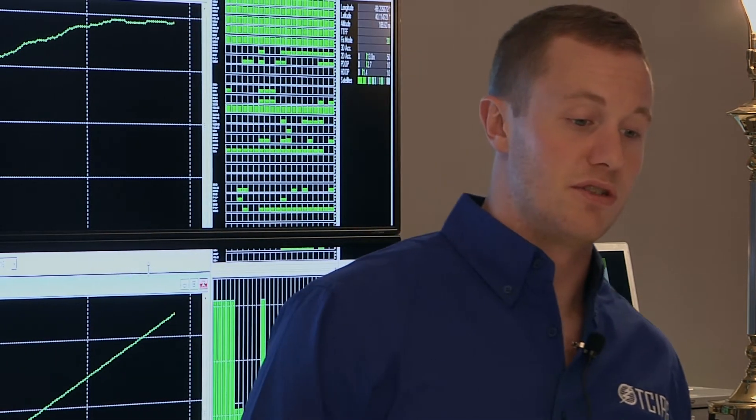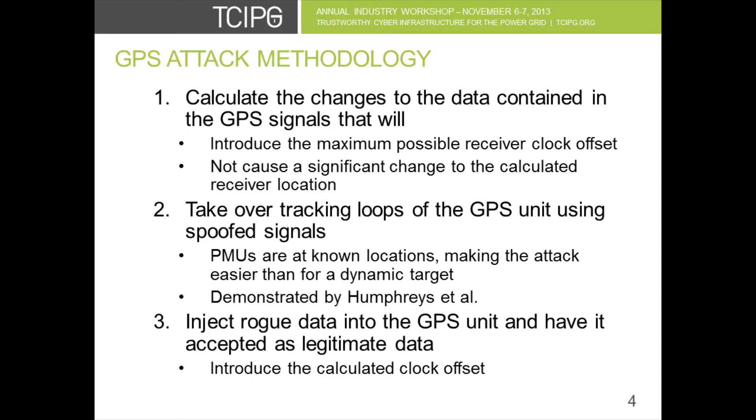The type of attack that we are demonstrating is one that is yet to be demonstrated. It involves changing the data encoded on the signal in order to induce subtle errors on the receiver. This is done by introducing data that will change the receiver clock offset while keeping the receiver position static. In this way the attack will not be detected and so the receiver will continue to appear to operate properly.